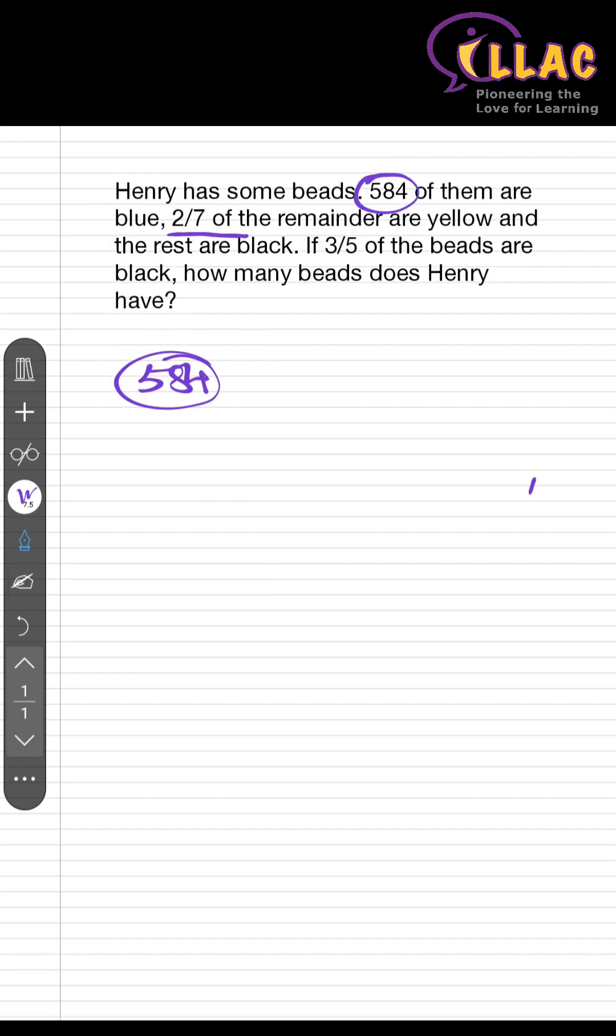And then the question says 2 over 7 of the remainder are yellow, which means this is something outside of the 584. So you draw a rectangle to represent this remainder and you cut it into 7 parts. 1, 2, 3, 4, 5, 6, 7. And 2 over 7 are yellow, so you label them as yellow. And they tell you that the rest of them are black. So these are the black.